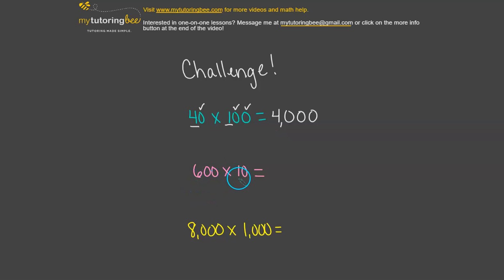How about 600 times 10? We've got a 6 times 1. So that part is 6. And then we've got two zeros from the 600 and one zero from the 10. So we have a total of three zeros. And then we're going to put in our comma. So you should have gotten 6,000.